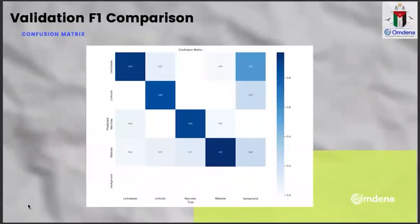We were also looking at the YOLO model, which was very different from the others as it focused on detection of WBCs — white blood cells — inside PBS, the peripheral blood smear. YOLO also did very well with the detection, and the confusion matrix shows that almost all the white blood cells were correctly classified. The percentage of unclassified cells was also very small.